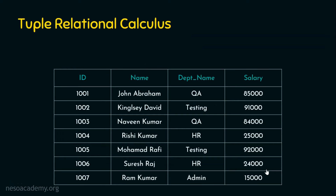Let's take an example table to explain how a tuple looks like and how tuple relational calculus actually works. Suppose this is the instructor table we have taken. This instructor table contains id, name, department name, and salary — only four columns, just for an example. Now tuple relational calculus is going to retrieve tuple by tuple. We know a tuple is a row. If we are going to retrieve all the values from this table — all rows, all columns — we issue a query which retrieves all the tuples in the table.